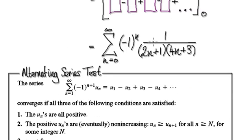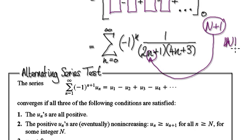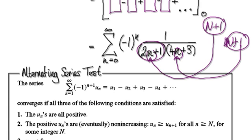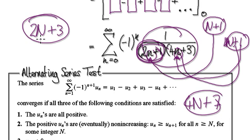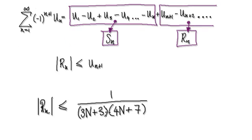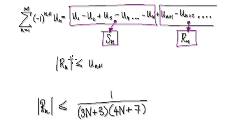Going back to our series, this is our U_N — the current term. The next term is found by putting N+1 in. Substituting N+1 gives 2N+2+1, which is 2N+3. Then putting that into the denominator gives 4N+4+3, which is 4N+7. So the next term U_{N+1} is given by this expression. Your remainder will always be less than or equal to this, by the alternating series remainder theorem.